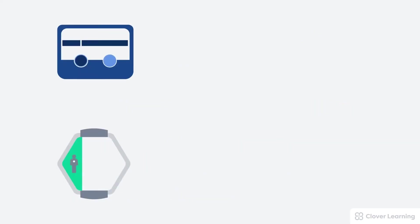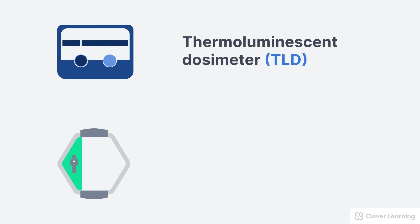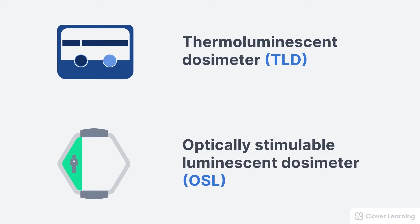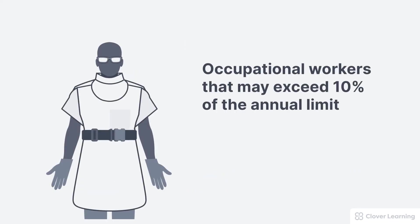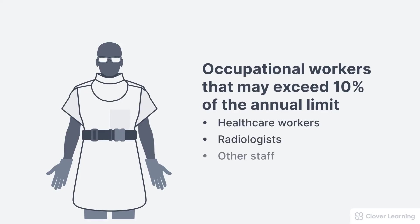Personal dose is tracked by wearing a personal dosimeter, and there are two types: thermoluminescent dosimeters called TLDs, and optically stimulable luminescent dosimeters called OSLs. All personal dosimeters have the same function — they're worn by the operators to track their dose over a period of time. Certain people must wear a personal dosimeter: occupational workers that may exceed 10% of their annual limit, which includes almost all healthcare workers who work directly with ionizing radiation, as well as radiologists and other staff that might exceed 10% of the annual limit.